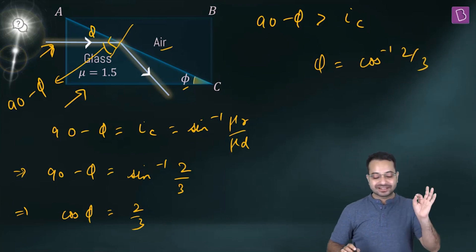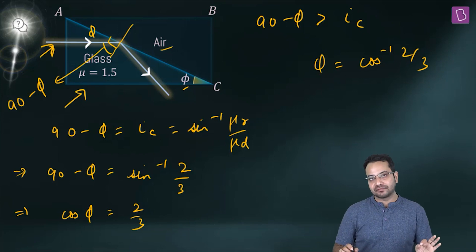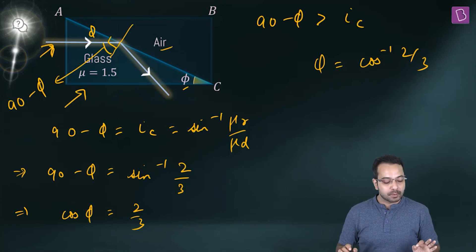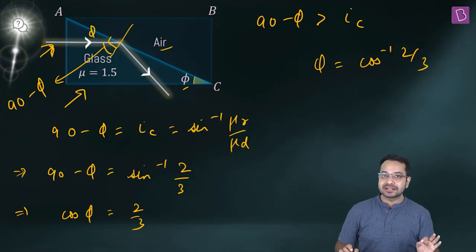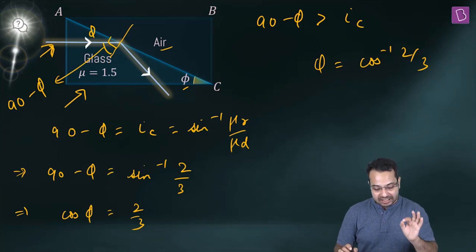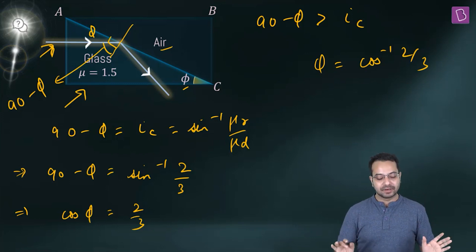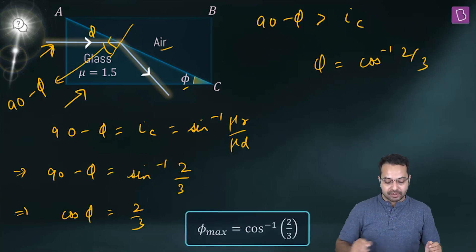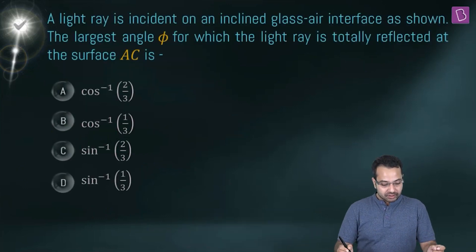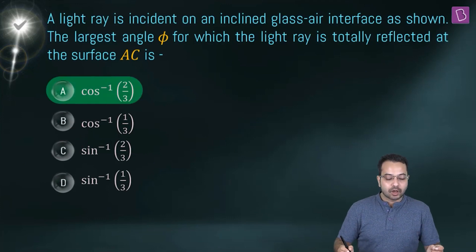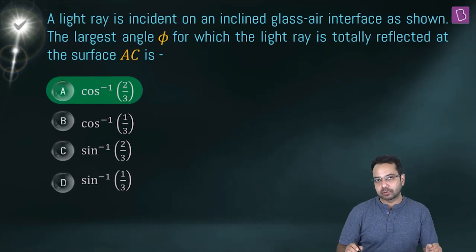If φ = cos⁻¹(2/3), then 90 − φ is the critical angle. If φ decreases from this amount, total internal reflection will take place; otherwise it will not. So the answer is option A.